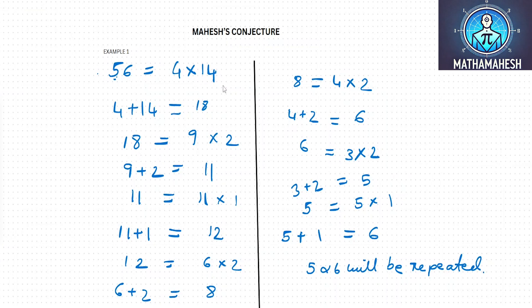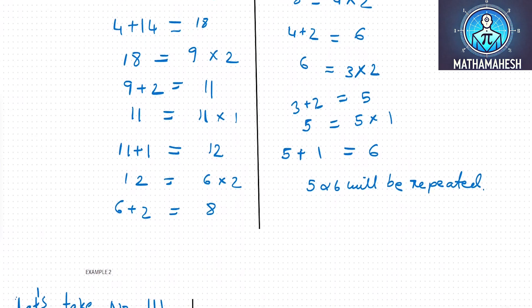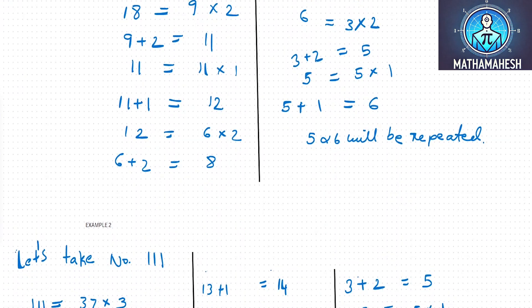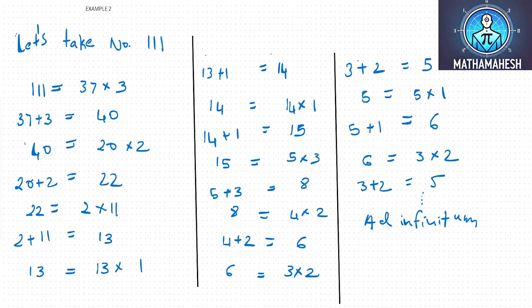Now as you can see, 6 will again become 5, 5 will become 6, and so on, ad infinitum. Let me give you another example. Let's take the number 111.